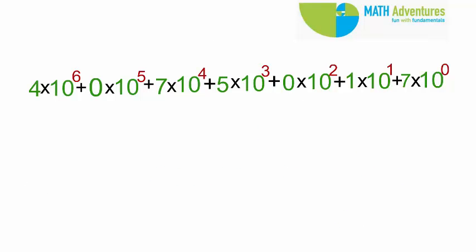Now, suppose you are given the expanded form of a number. 4 into 10 to the power of 6 plus 0 into 10 to the power of 5 plus 7 into 10 to the power of 4 plus 5 into 10 to the power of 3 plus 0 into 10 to the power of 2 plus 1 into 10 to the power of 1 plus 7 into 10 to the power of 0.